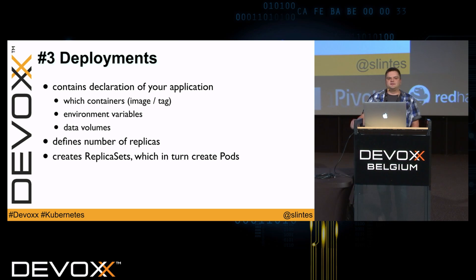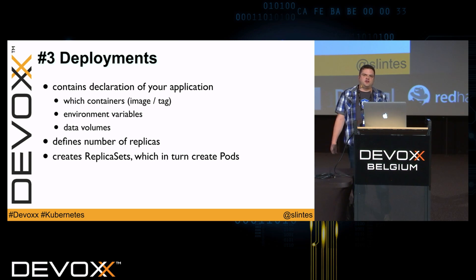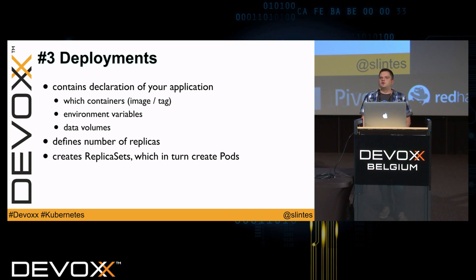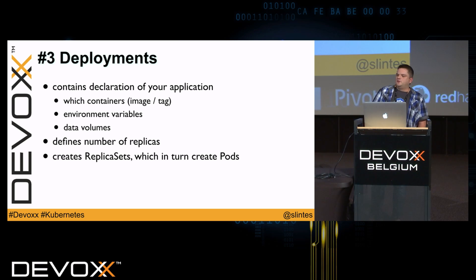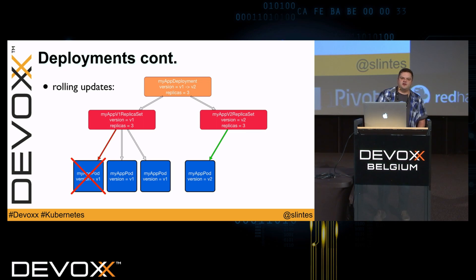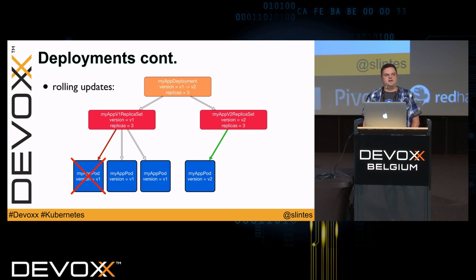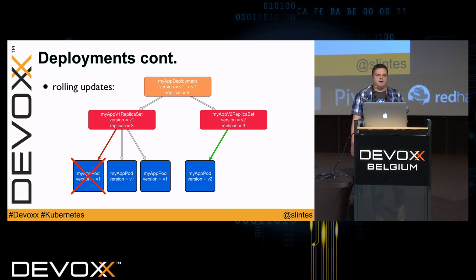Replica sets are created by deployments. Deployments contain the declaration of your containers — the image and tag, environment variables, and data volumes — basically everything you would use in a docker run command. You also define the number of replicas. When you edit a deployment, Kubernetes performs rolling updates: it creates a new replica set for the new version, starts the first pod, then alternately scales down the old replica set and scales up the new one. If something goes wrong, Kubernetes stops the process and you can issue a rollback to your old version.